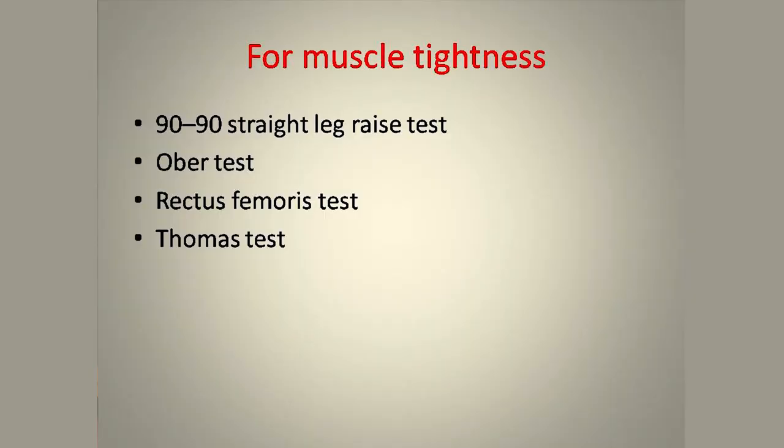For muscle tightness, the 90-to-90 straight leg raise test, Ober test, rectus femoris test, and Thomas test can be performed. Normal symptoms to look for include localized pain, pain after prolonged sitting, worsening pain after repeated movement, muscle spasms, regional tenderness, tingling, numbness in the limbs, and weakness of the affected limb due to possible nerve compression.